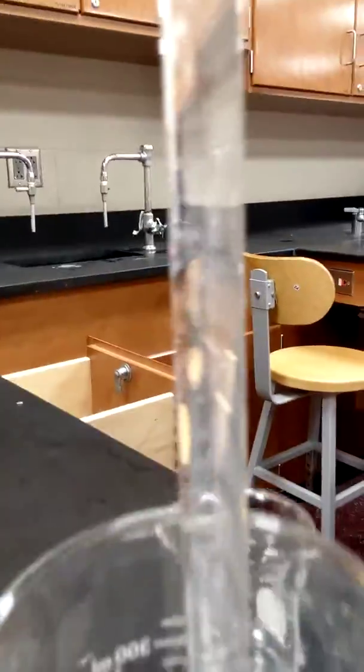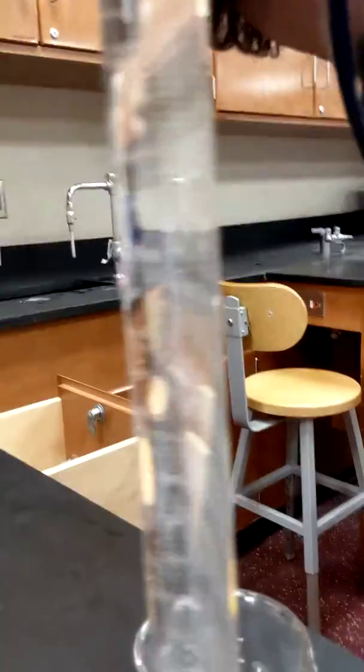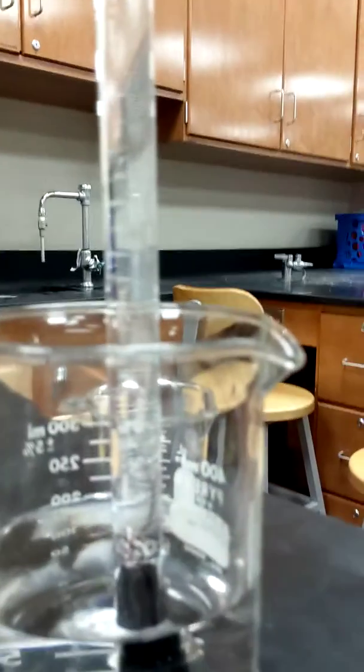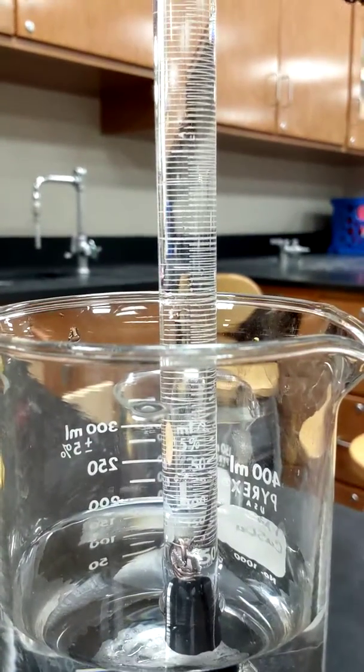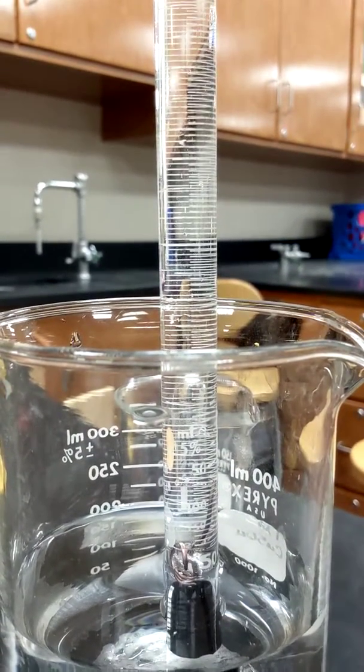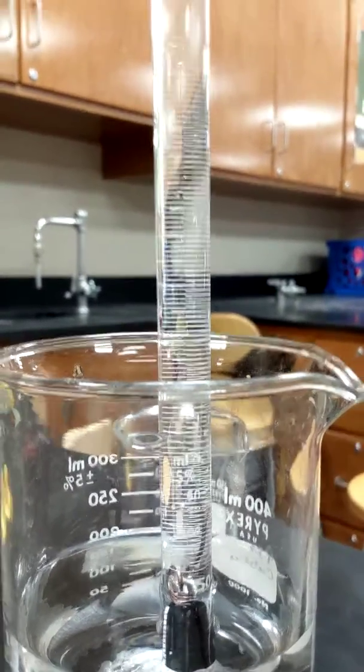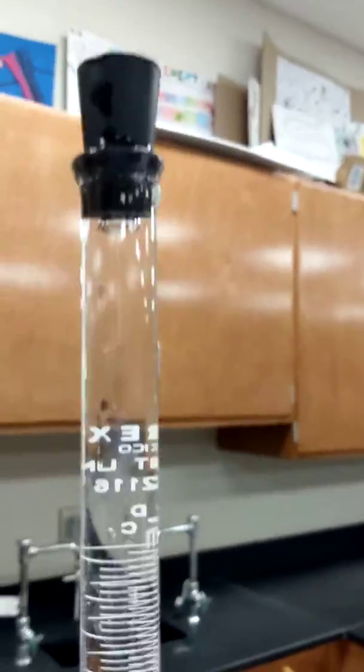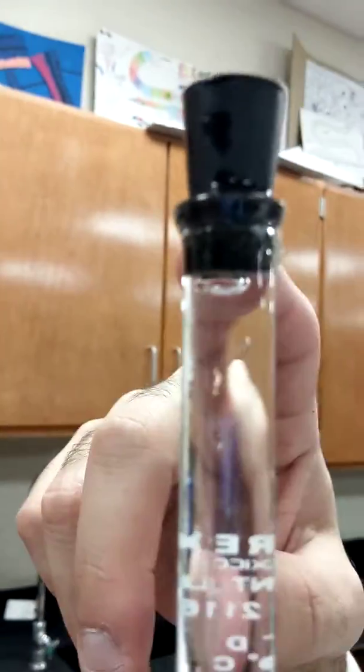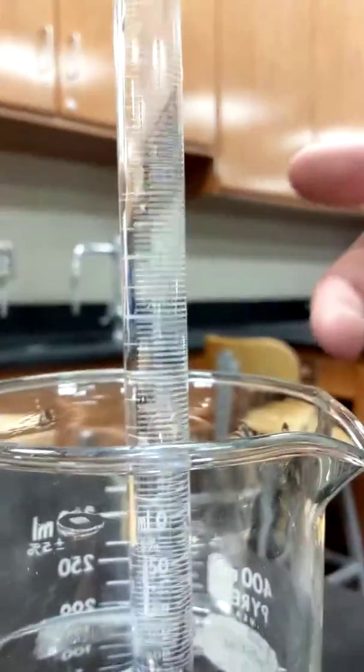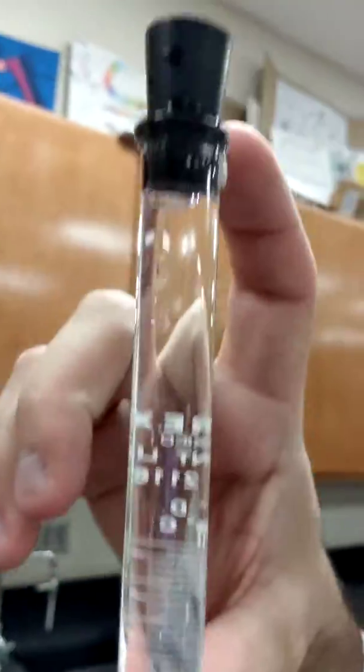You might already start seeing some bubbles forming in here. So I'll zoom in a little bit. You see some bubbles forming. It's gonna start bubbling vigorously very soon. And what's gonna happen is you're gonna get empty space eventually up here and the gas that's produced, which is hydrogen gas, is gonna move down the liquid layer and fill in the tube. You are going to be reading this volume later on and that volume is going to be equal to the volume of hydrogen gas that was evolved.